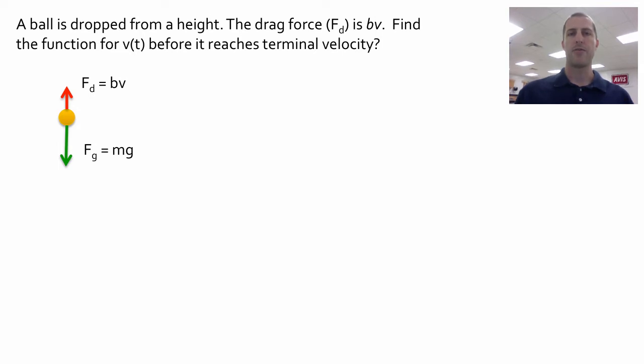Initially, the drag force is going to be less than the gravitational force, and as the ball speeds up, eventually they're going to be equal, and that's the terminal velocity we just saw. So we know that F net equals MA, and our net force is going to be the gravitational force minus the drag force, and we also need to replace the acceleration with dV dt.